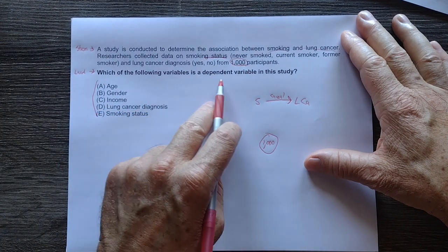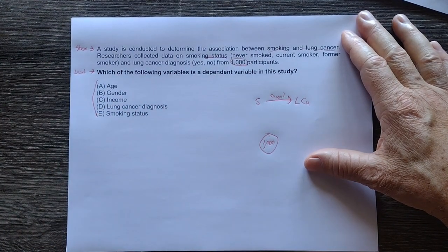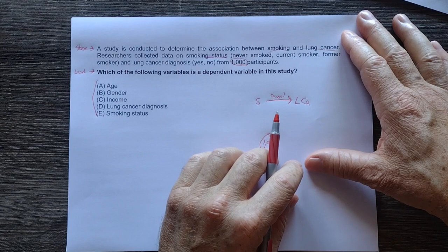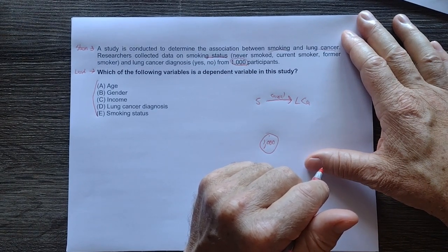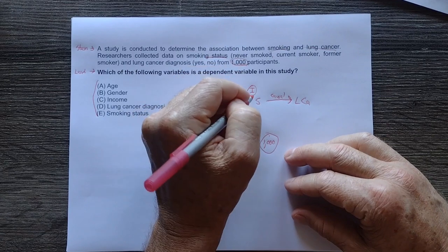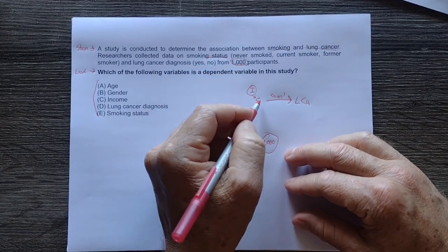Which of the following variables is a dependent variable in this study? We're looking at the dependent variable. If we have smoking and lung cancer, which one is independent and which one is dependent? Smoking status is the independent variable because that is the one in the causal pathway causing the lung cancer.